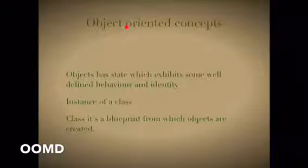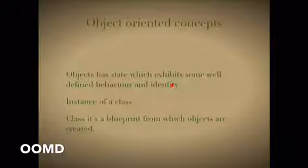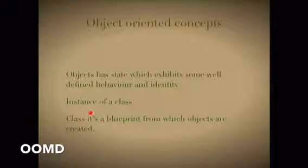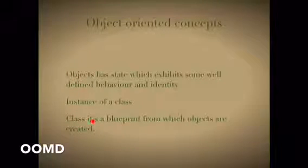Object-oriented concepts: an object has state, exhibits some well-defined behavior, and has identity. It is an instance of a class. A class is a blueprint from which objects are created. If you know these two concepts — object and class — then we can proceed further.